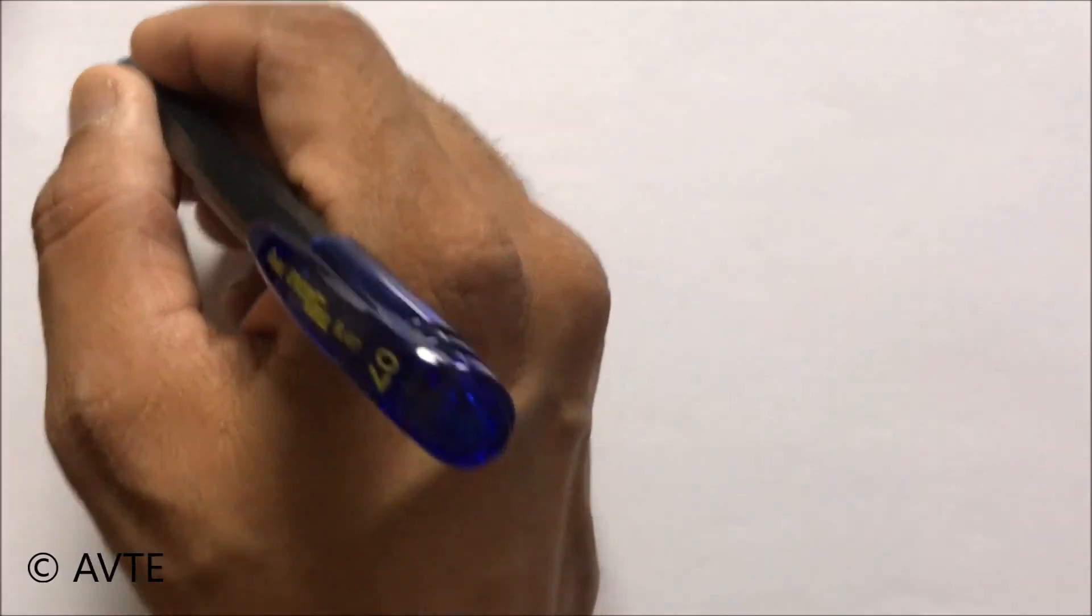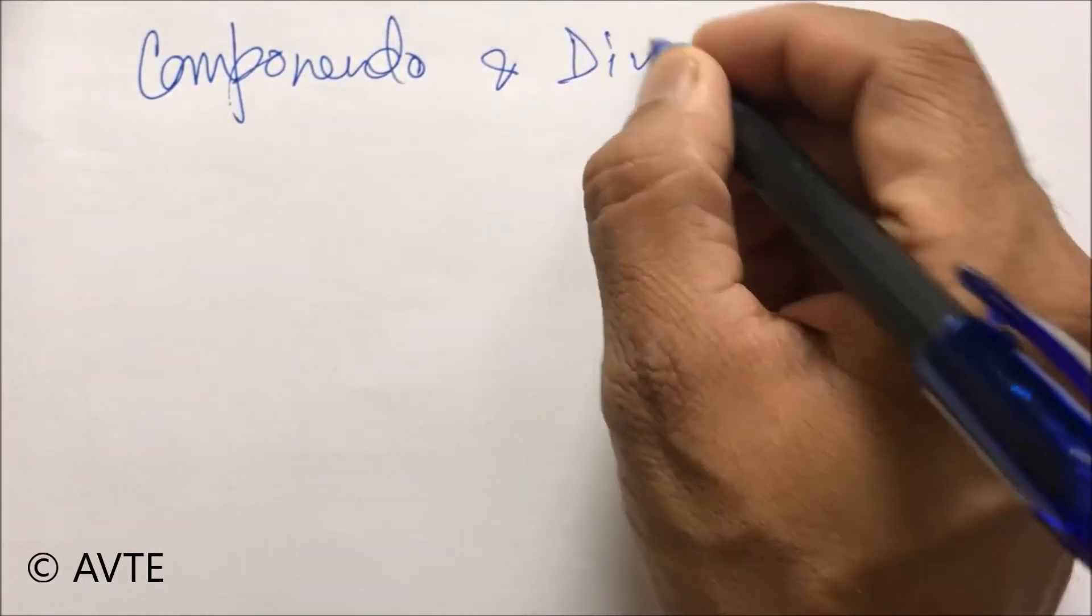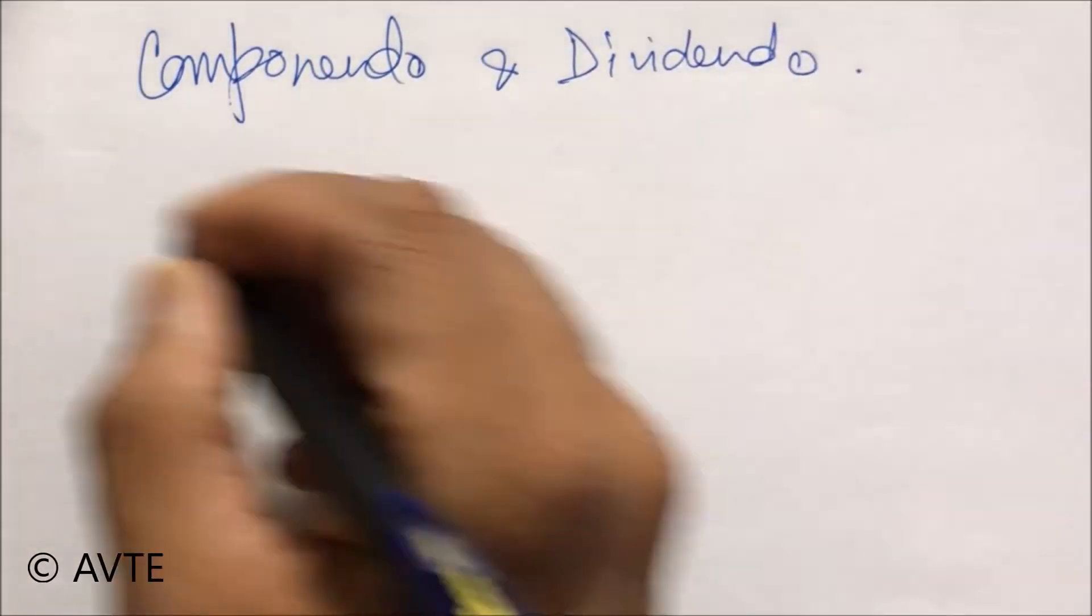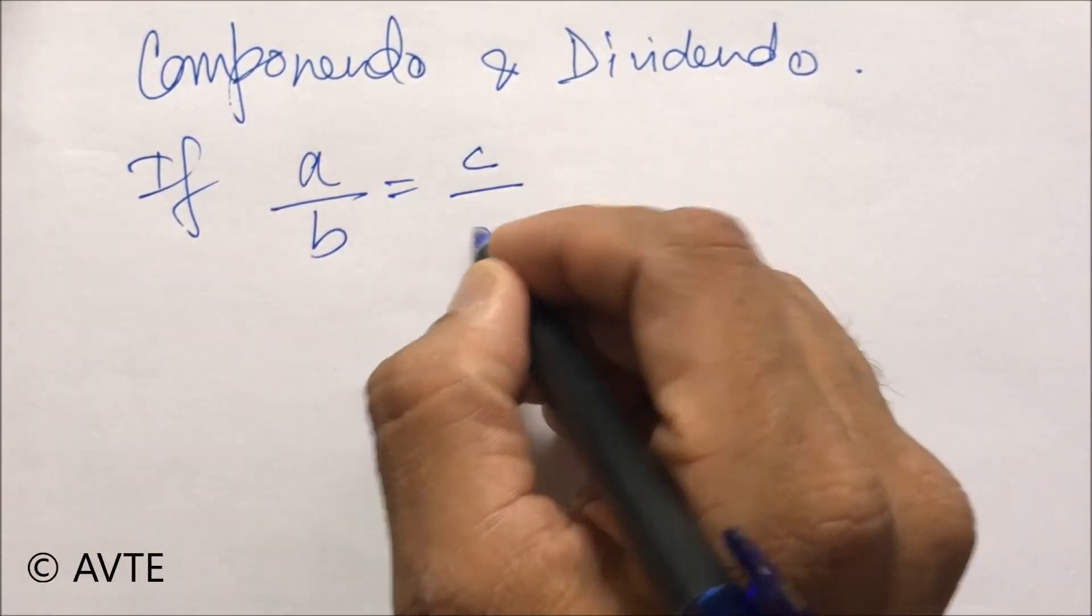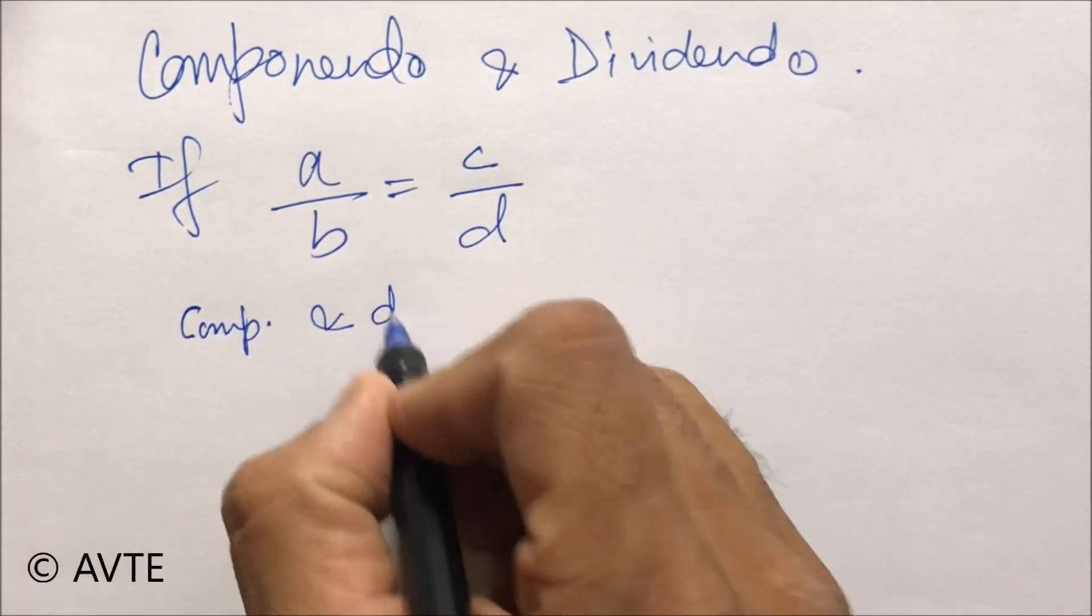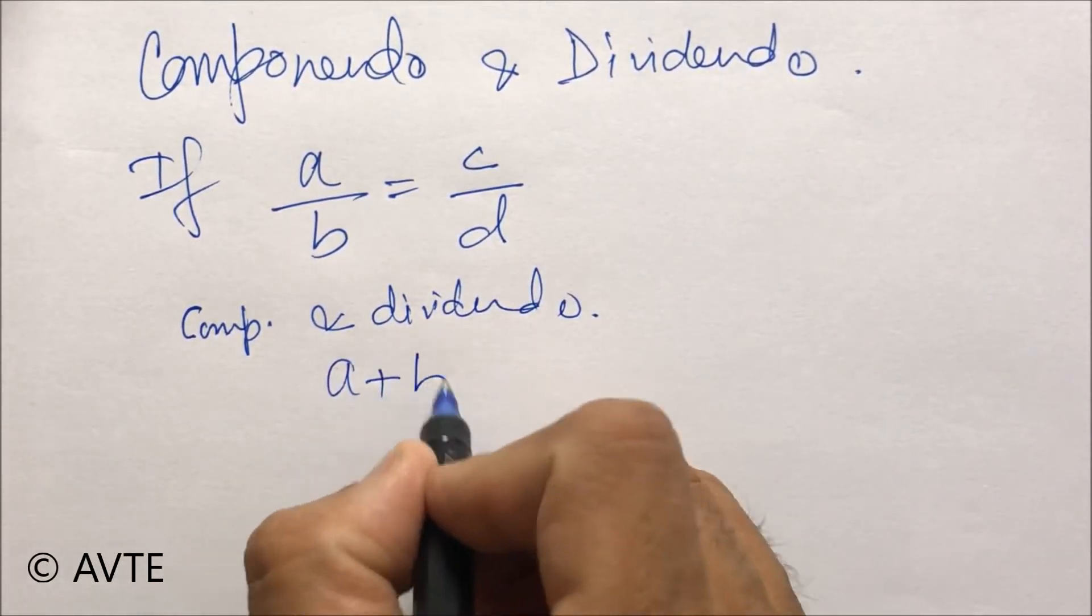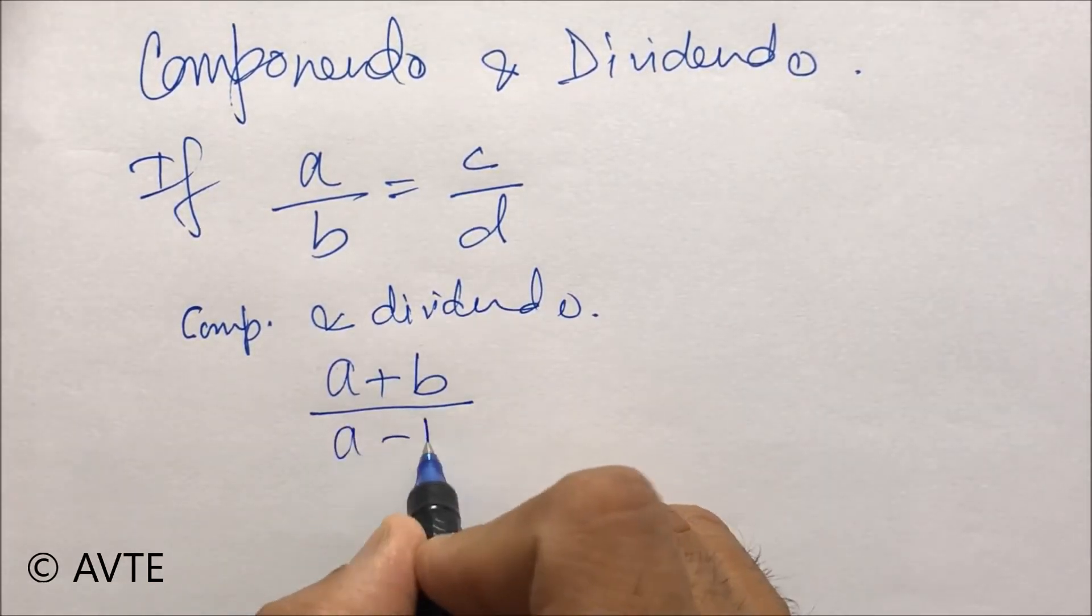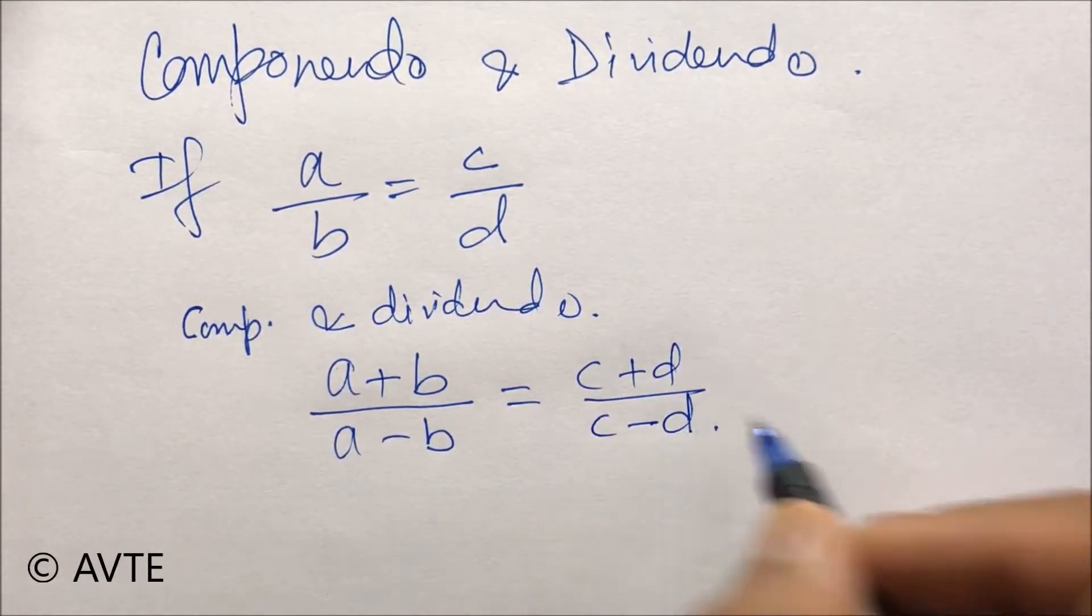We'll now understand the working of componendo and dividendo. If we have a/b equals c/d and we apply componendo and dividendo, then it is (a + b)/(a - b) on one side and (c + d)/(c - d) on the other side.